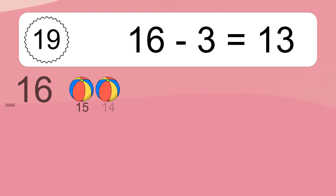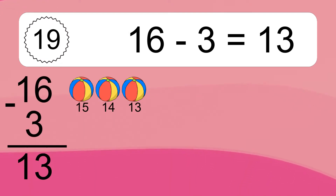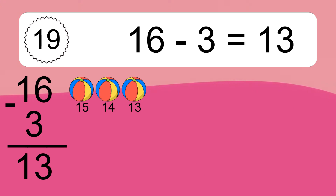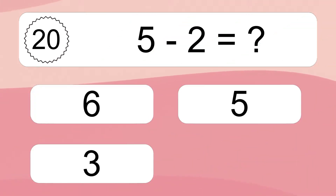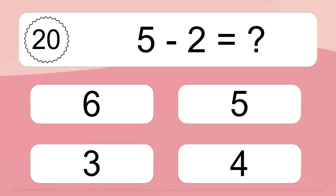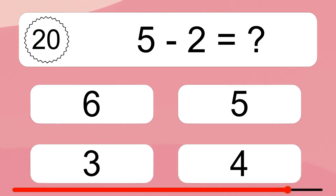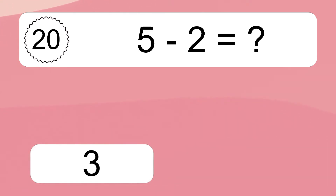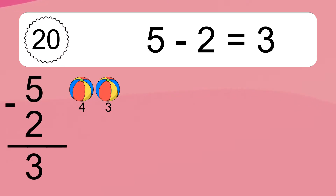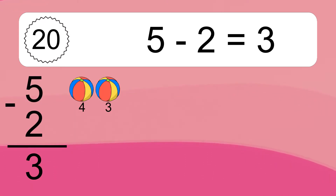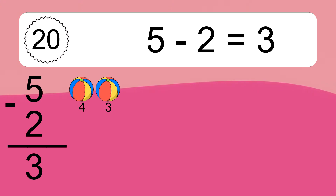16 minus 3 equals 13. Let's count it: 15, 14, 13. 5 minus 2 equals what? 5 minus 2 equals 3. Let's count it: 4, 3.